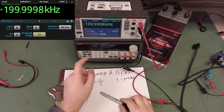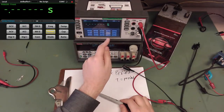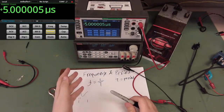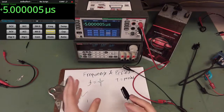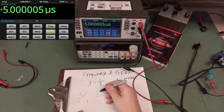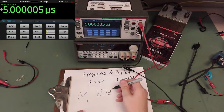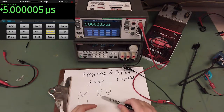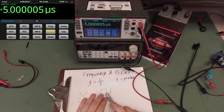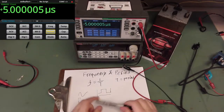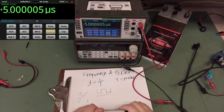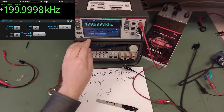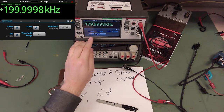Frequency and period work best with square waves, though modern DMMs handle sine waves well. Resolution does decrease as you get further from a square wave — check the spec sheet for derating. Now let's use the rel (relative) function: clicking it on takes the current reading as the new zero level. I can see the rel offset value in measurement settings and even change it manually.